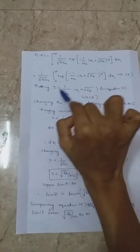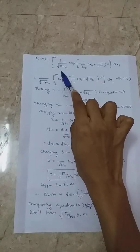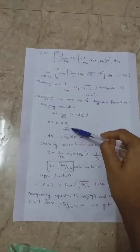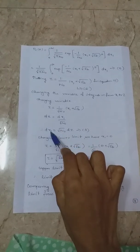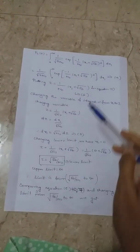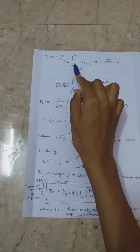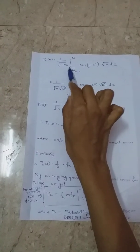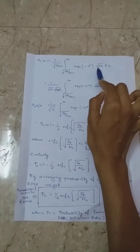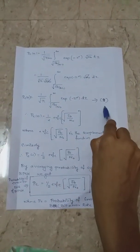Ep represents Z. We then represent Z and apply the dz formula. This value involves the root infinity expression. Using the dz formula, we substitute 1 over root (pi times N0), integrating in terms of Z, where dX equals root N0 times dZ, and N0 is the Gaussian noise term.